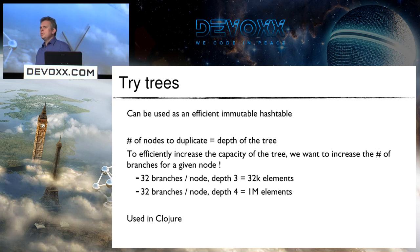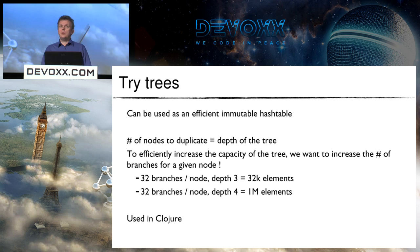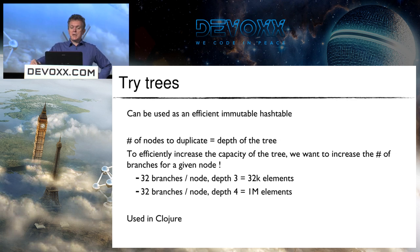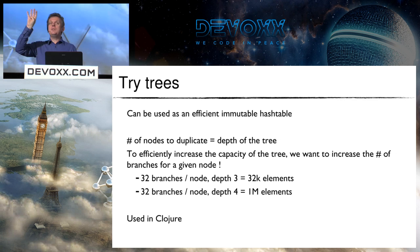If I take 32 branches per node, with a depth of 3 I can hold 32,000 elements, and depth 4 gives 1 million elements. Modifying such an immutable hash table of 1 million elements takes only 4 operations. That's a very efficient algorithm. By the way, this algorithm has been used in Clojure, a language on the JVM.